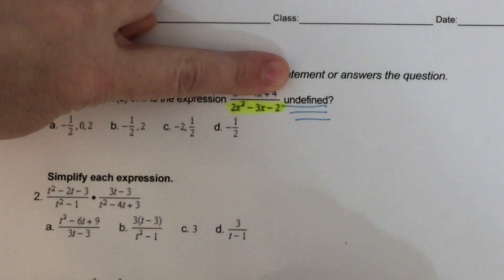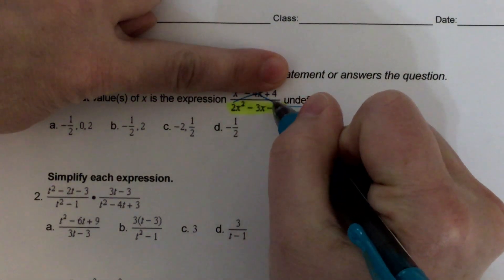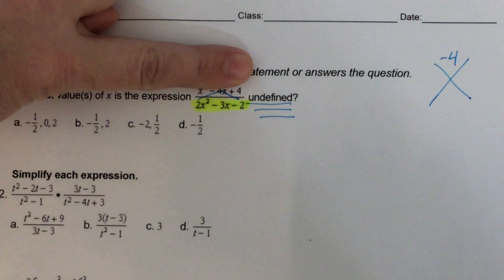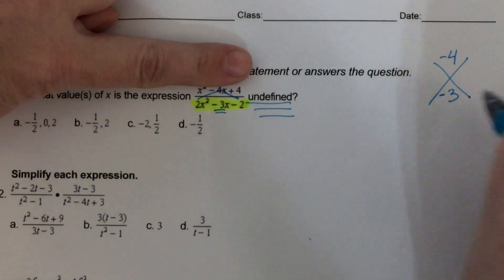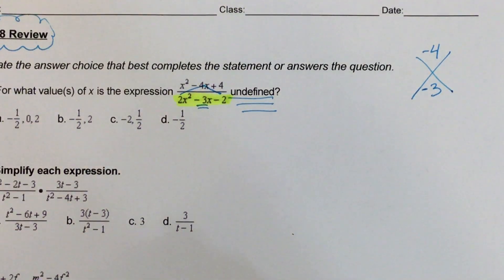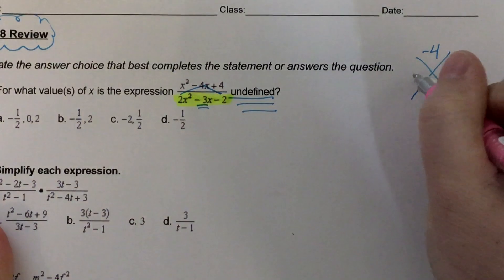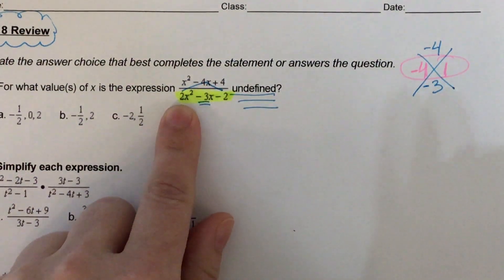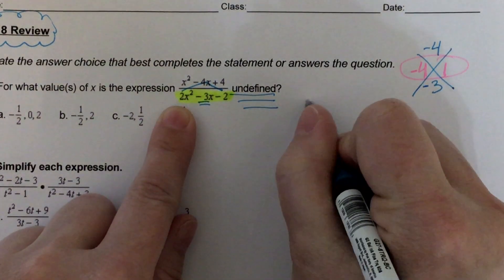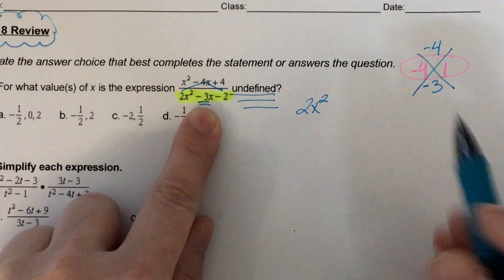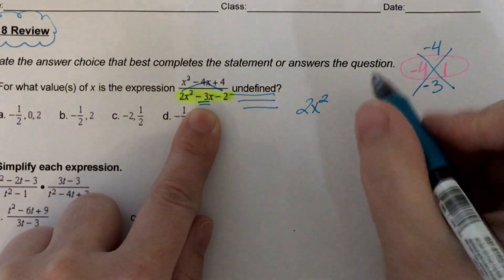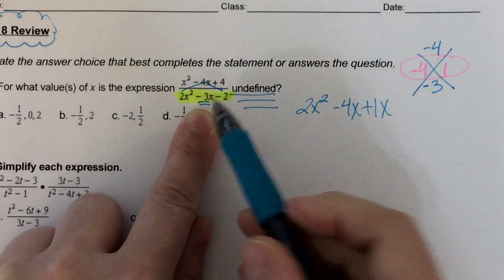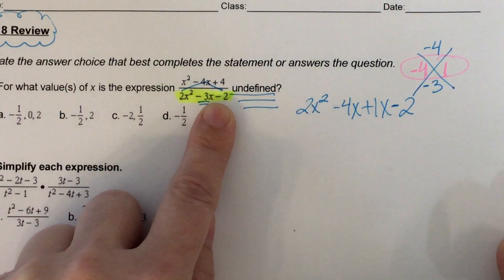First I look for a GCF but there's not one. There are three terms, so I'm going to use the AC rooftop method. A times C: two times negative two is negative four. I want two numbers that multiply to make negative four and add to make negative three — those are negative four and positive one. This is the long one, so I drop the first term and replace the middle term with negative four x and plus one x.